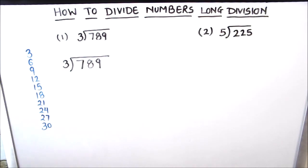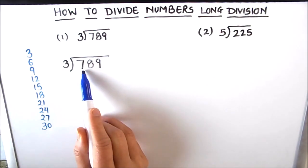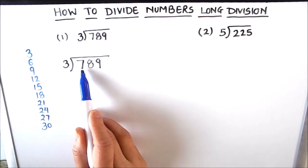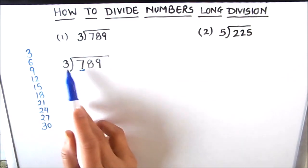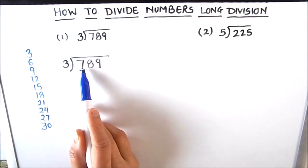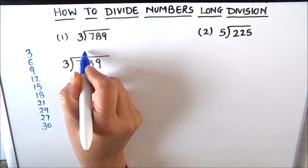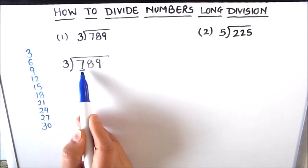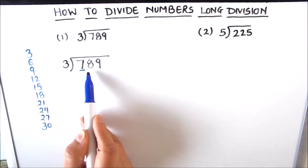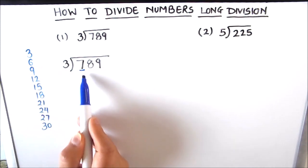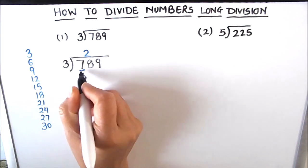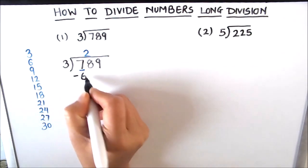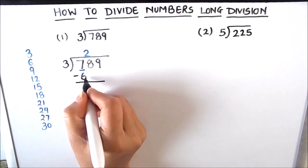In division we always start with the number which has the highest place value. Here the highest place value number is 7, so we will first divide the hundreds digit which is 7. We check how many times 3 goes into 7 — 3×2=6. We write 2 in the quotient, picking a number just less than or equal to 7. We write 6 below 7 and subtract: 7 minus 6 is 1.